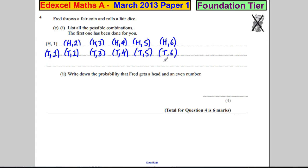So he's got to both get a head on the coin and an even number. Let's just look above: these are all the head ones, so we discard the tail outcomes. That's head and even, that's head and even, that's head and even. There are three possibilities.